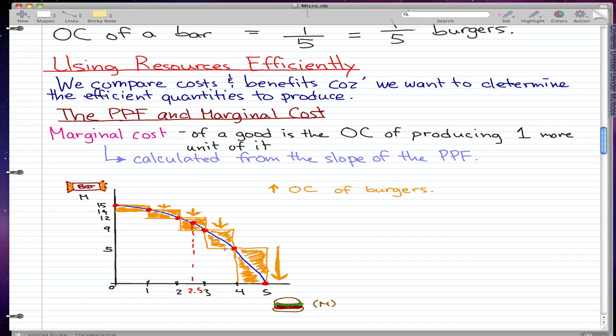Pretty much along all these dots, for what we want, we compare the costs and benefits to see if it's the best action we should take, to see if it's what we want to produce between the two goods, the amount that we want to produce between the two goods.